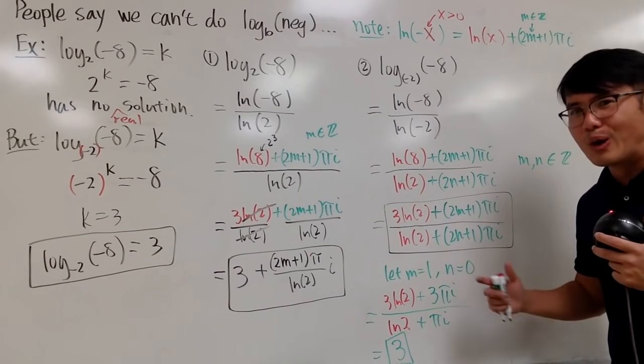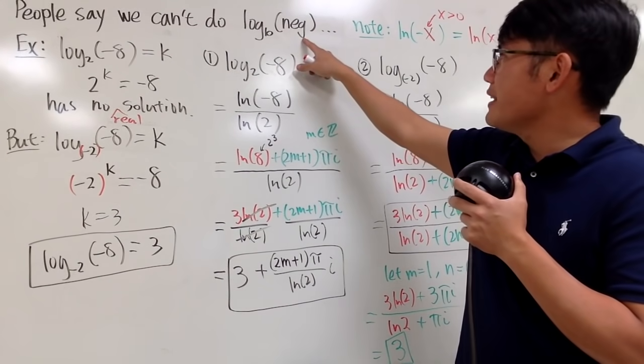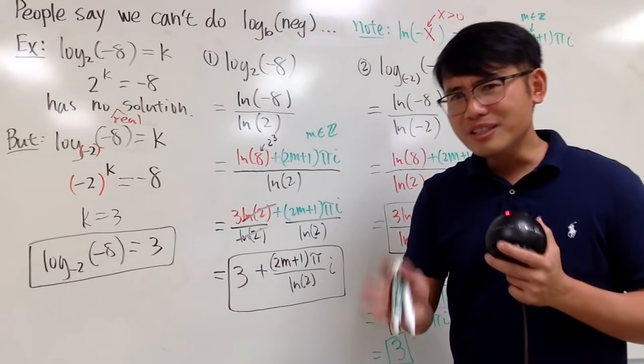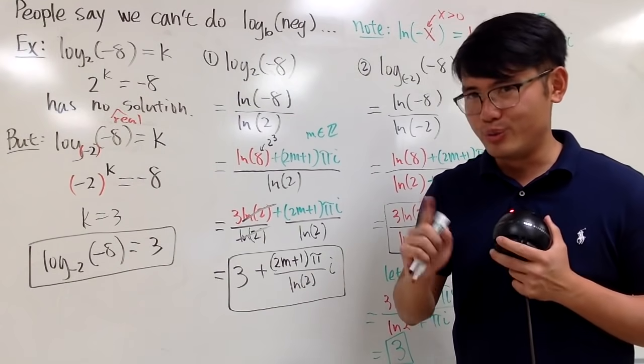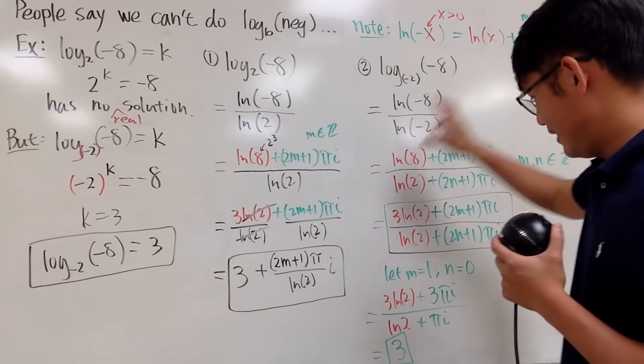So, next time when you hear people say, we cannot put negative numbers inside of logarithms, the reason is just because they want to stay in the real world. But, if you are willing to go to a complex world, you can do a lot more.